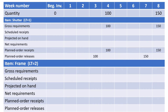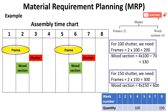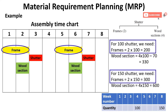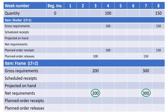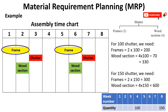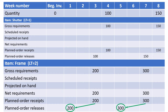Now let us make another table for the frame. To assemble the required lots of shutters, 200 frames are required at the beginning of Week 3 and another 300 frames are required at the beginning of Week 7, as one shutter requires two frames. So the gross requirements of the frames are 200 frames in Week 3 and 300 frames in Week 7. Since there is no scheduled receipt or inventory on hand, the net requirements are 200 frames in Week 3 and another 300 in Week 7. Consequently, the planned order receipts are 200 in Week 3 and 300 in Week 7. The frames are ordered from suppliers with a lead time of 2 weeks, meaning they have to be ordered in Weeks 1 and 5. So in the MRP, the frames planned order releases are: 200 frames released at the beginning of Week 1, and 300 frames released at the beginning of Week 5.